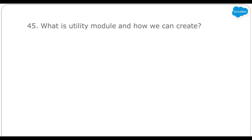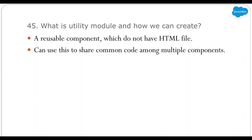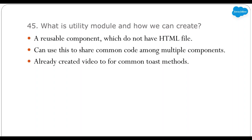Next: what is a utility module and how can we create one? A utility module is a reusable component that does not have an HTML file, and we can use it to share code among multiple components. To create one, you create a simple component, delete the HTML file, and in the JS file you add all your common methods and export them with the export keyword. You can then import those methods wherever needed using the import keyword. I have already created a video explaining how to create a utility module in detail — a text message utility to show toast messages from all components. Check the link in the description.